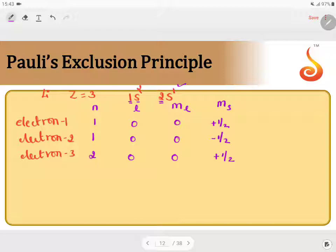Now, by looking at this example, it is very clear that there are 3 electrons. But if you find the set of quantum numbers, that is N, L, ML and MS, for each electron, you are getting a different value.